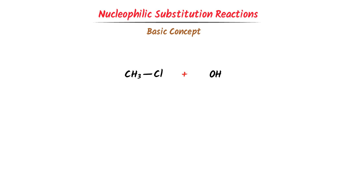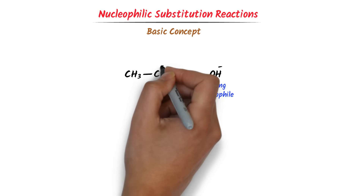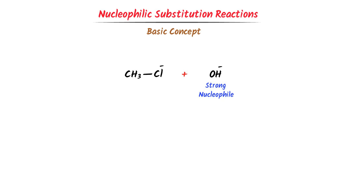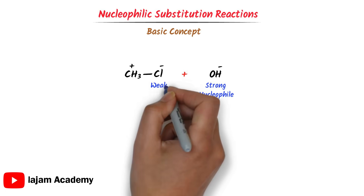Remember that a nucleophile always has a negative charge. Here, this nucleophile OH is a strong nucleophile. On the other hand, chlorine is more electronegative than carbon, hence it attracts the shared pair of electrons more towards itself. As a result, a partially negative charge appears on this chlorine and a partially positive charge appears on this carbon. This chlorine is a weak nucleophile.